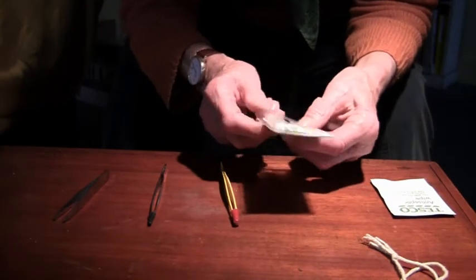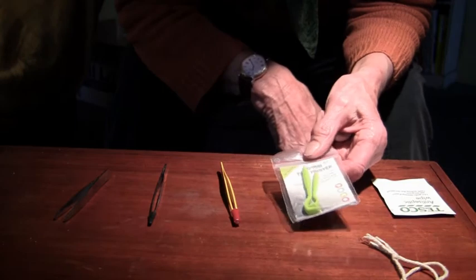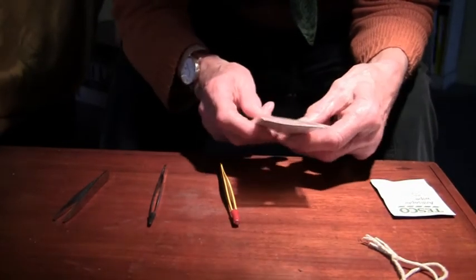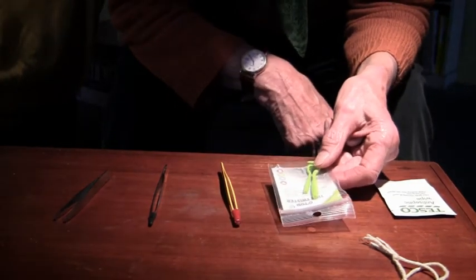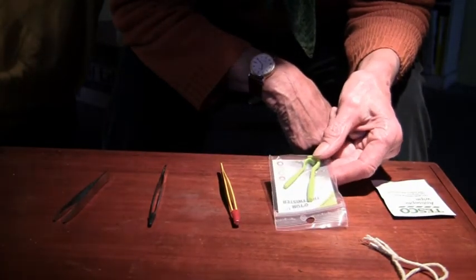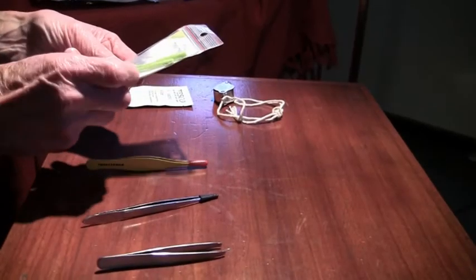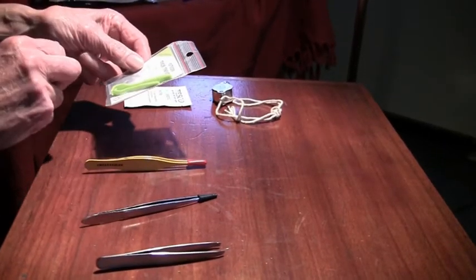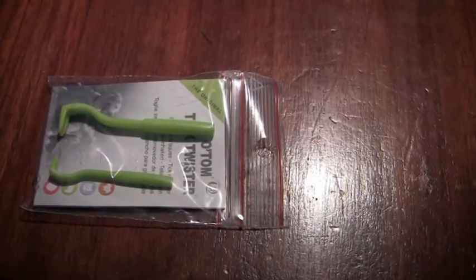And these are what are called twisters which the Lyme charity, Bada, sell for about a fiver. I find, personally I find these difficult to use because you have to twist them. But other people find them very useful so it's your choice.